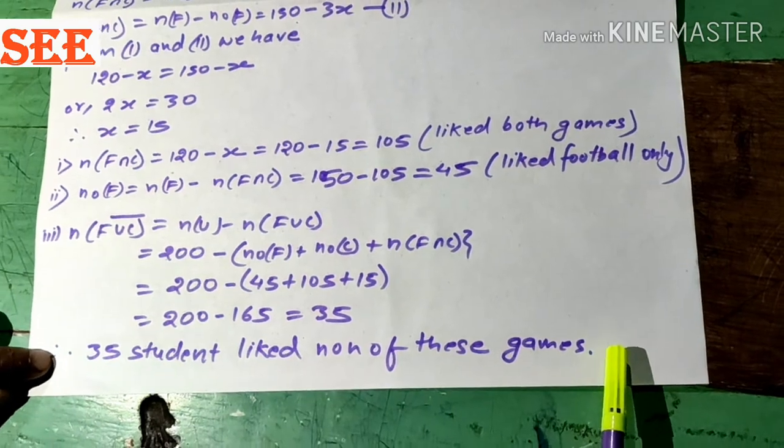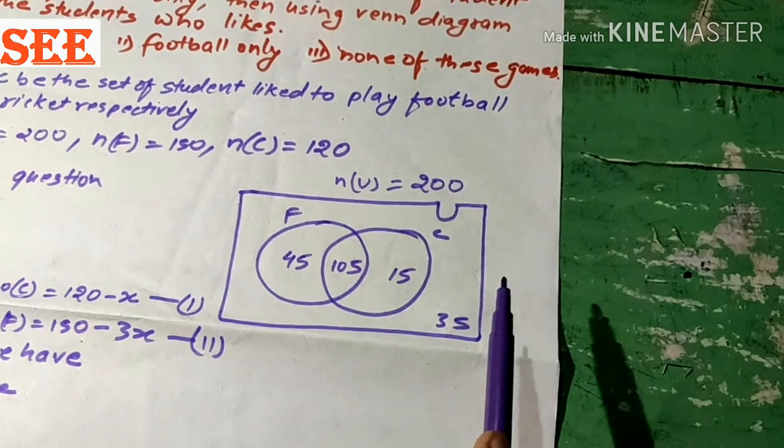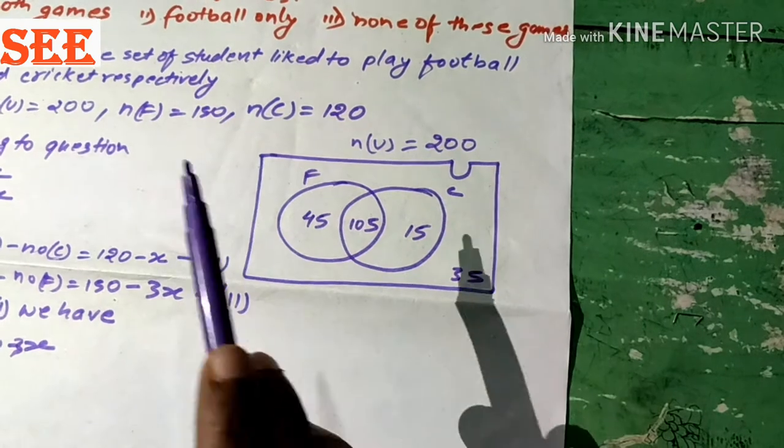Now, this is completed. Next, I shall explain the Venn diagram clearly. n(U) = 200 given in the question. n(F) denotes first circle, n(C) denotes second circle.